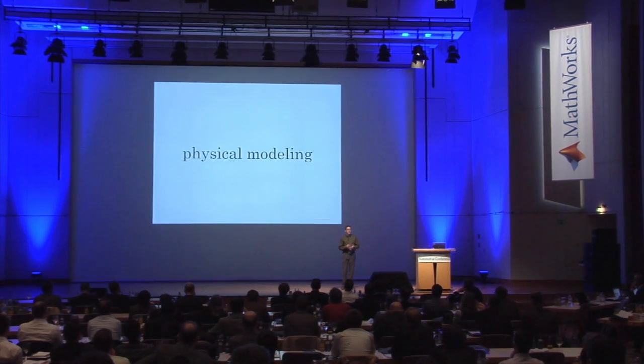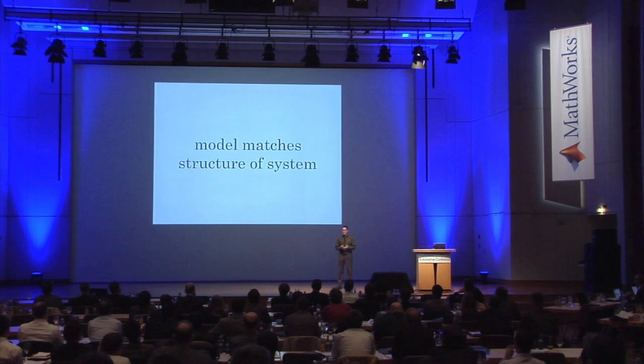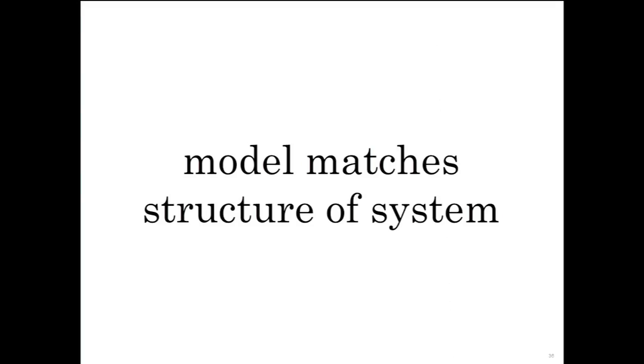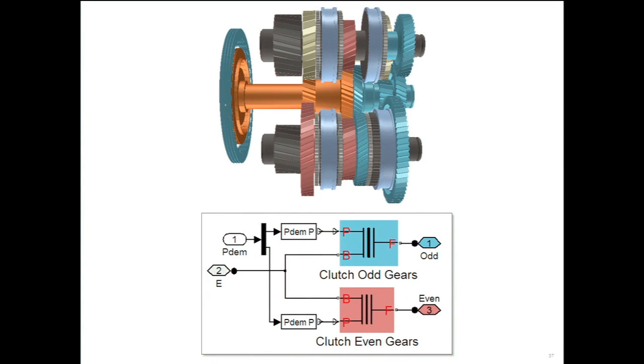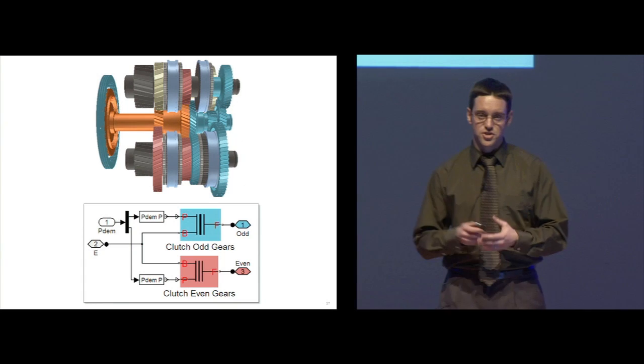With physical modeling, your model matches the structure of the system that you're developing. For example, in a dual clutch transmission, there are two clutches operating in parallel connected via two concentric shafts. We simply assemble the SimDriveline components to match this structure.